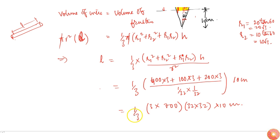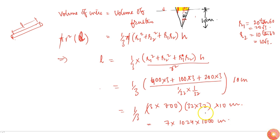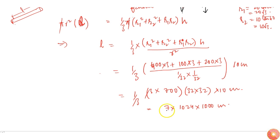The 3s cancel, this becomes 7 times 1024 times 1000 centimeters. This becomes 7,168,000 centimeters, which can be written as 71.68 kilometers. So this much length of wire is created from that frustum.